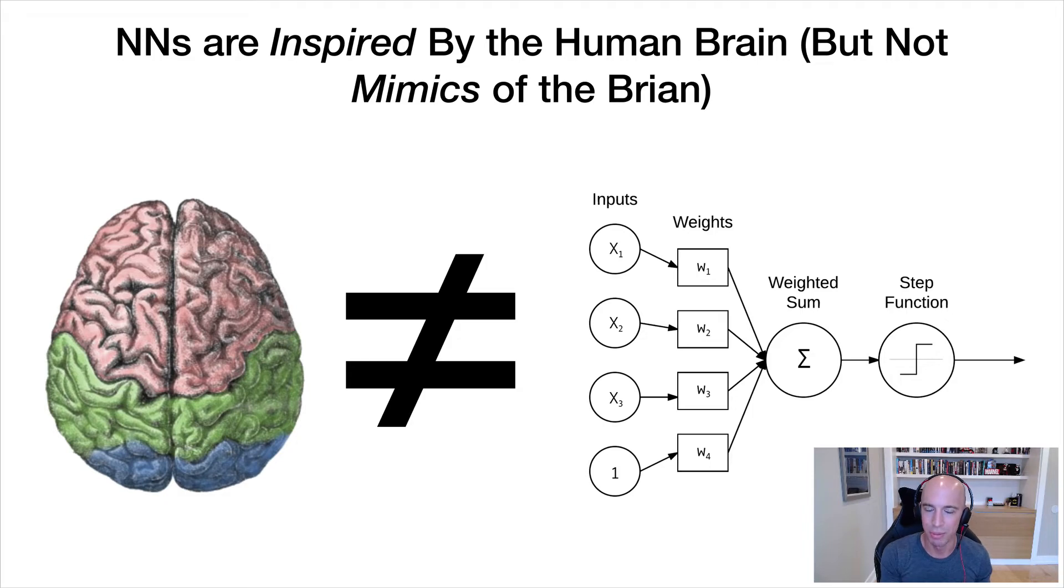That said, neural networks are inspired by the human brain, but they are not mimics of the brain. This is a common misconception I see to those new to artificial intelligence and specifically neural networks. They hear the name neural network and think this is the epitome of artificial intelligence, we're mimicking the human brain, we're doing interactions like the human brain does. No, that's not the case.